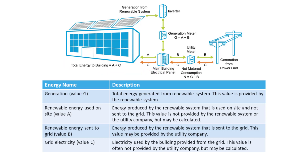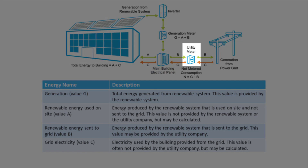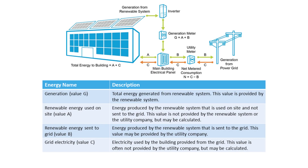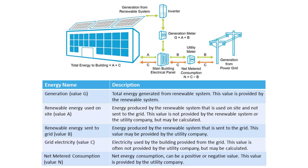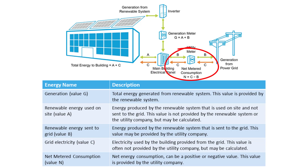Excess electricity generation sent back to the grid, or Flow B, is measured by the utility meter before leaving the premises. However, many utilities do not provide this value on the utility bill that goes to the customer. In such cases, the utility only provides customers with the net metered consumption, or N, which is equivalent to Flow C, grid electricity, minus Flow B, energy generated on-site and exported to the grid.